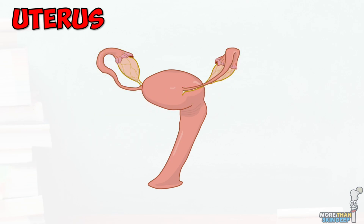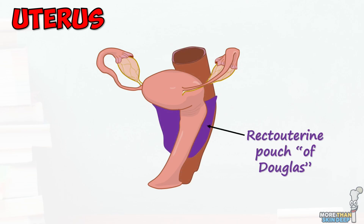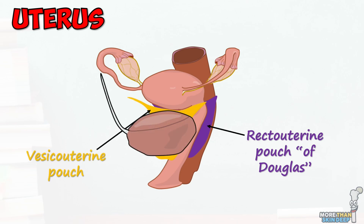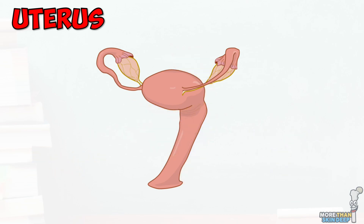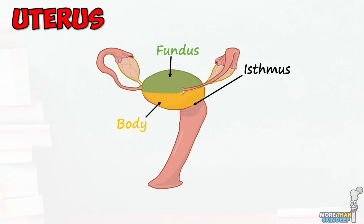The posterior fold of peritoneum between the uterus and the rectum is known as the recto-uterine pouch of Douglas, and the anterior fold between the uterus and bladder is known as the vesico-uterine pouch. You can divide the uterus into the fundus, which is the region where the fallopian tubes join, the body, which encloses the uterine cavity, the uterine isthmus, which is a narrower part in its inferior aspect, and the cervix, which we will discuss in a bit more detail shortly.